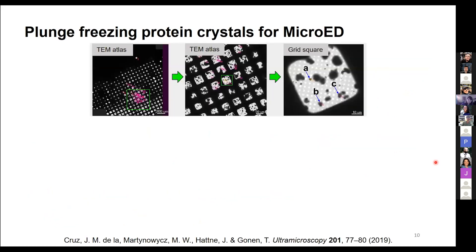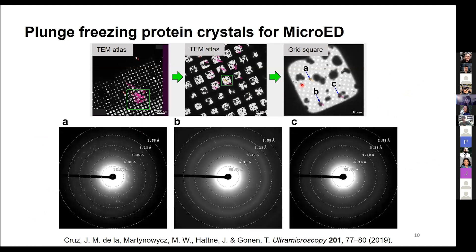Once you've plunge-frozen your grids, you should be able to take some TEM data. You might get an atlas and then a grid square. In this paper, tiny crystals at positions A, B, and C were shot and showed beautiful diffraction. But what if you have potential crystals that look like bigger blobs and you shoot them and don't see any diffraction? It might be that your target is not a crystal and doesn't diffract — that's totally possible — or it might be that the sample is too thick.